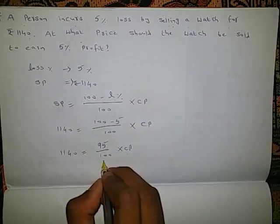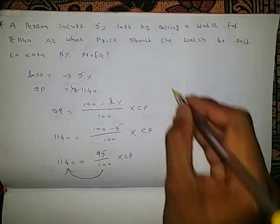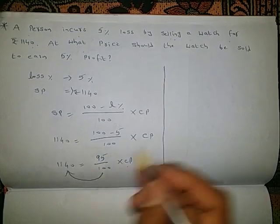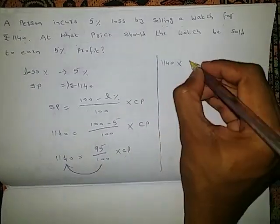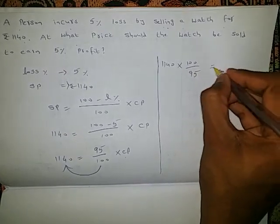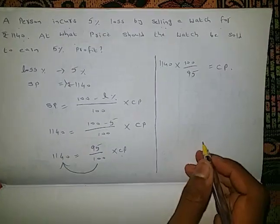We want cost price, so take this 95 by 100 to another side. This will become reciprocal. This will become 1140 into 100 by 95, which is the cost price.